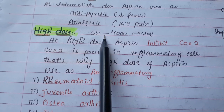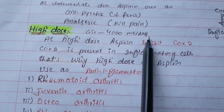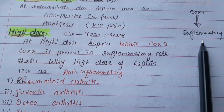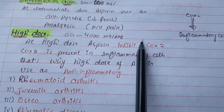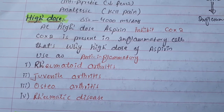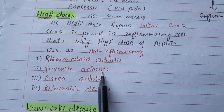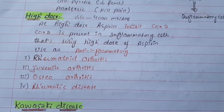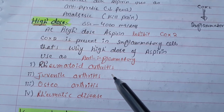High doses — more than 650 mg, up to 4000 mg per day — cause aspirin to inhibit COX-2, which is predominantly present in inflammatory cells. That's why high-dose aspirin is used as an anti-inflammatory, for conditions like rheumatoid arthritis, juvenile arthritis, osteoarthritis, and rheumatic disease. Aspirin has a short half-life, so short half-life drugs stay for a longer time in the joint.